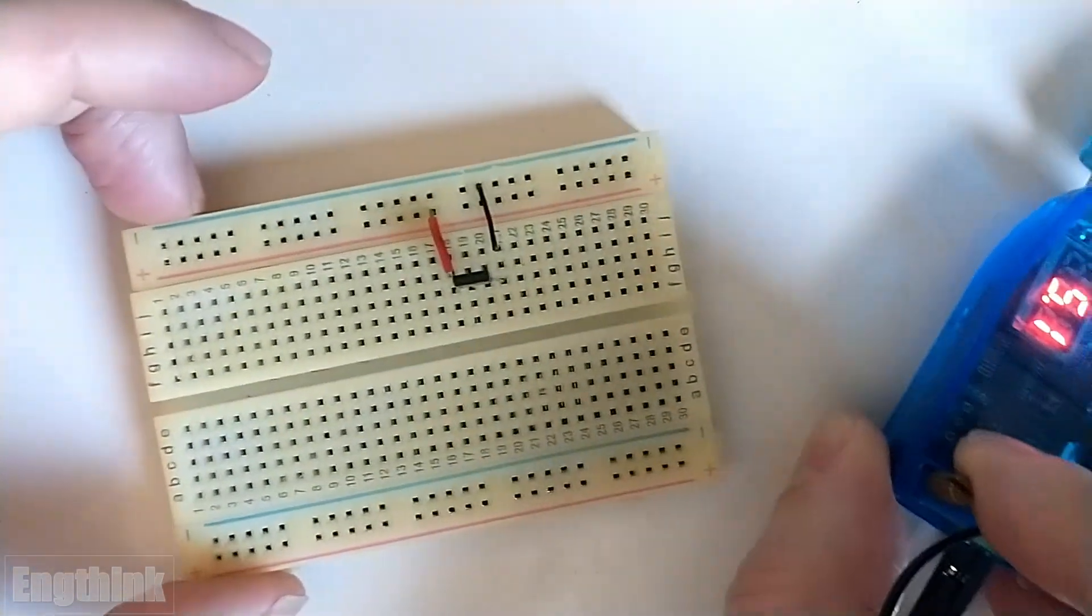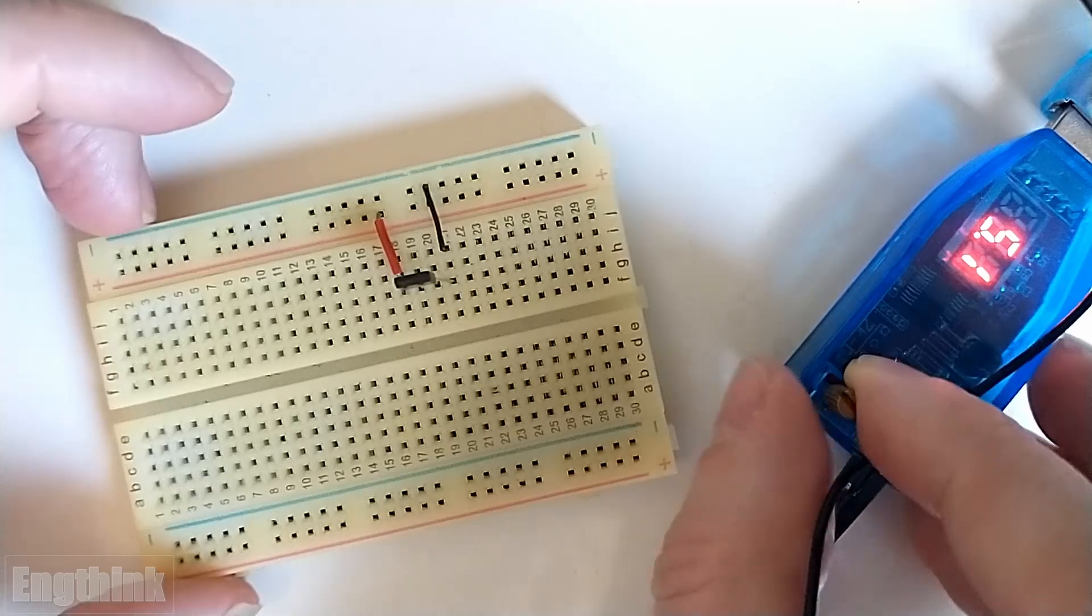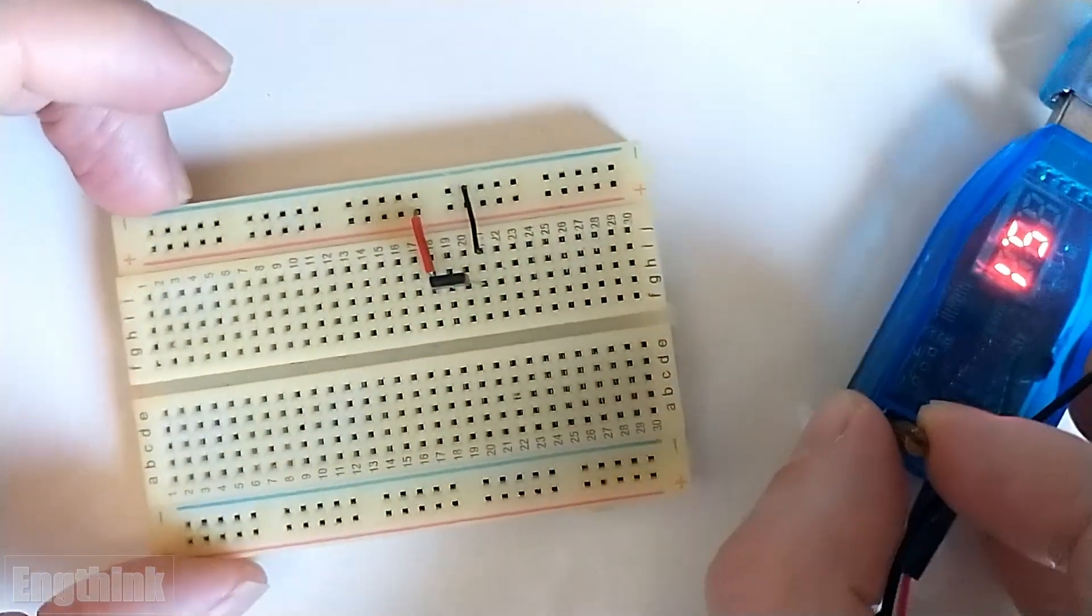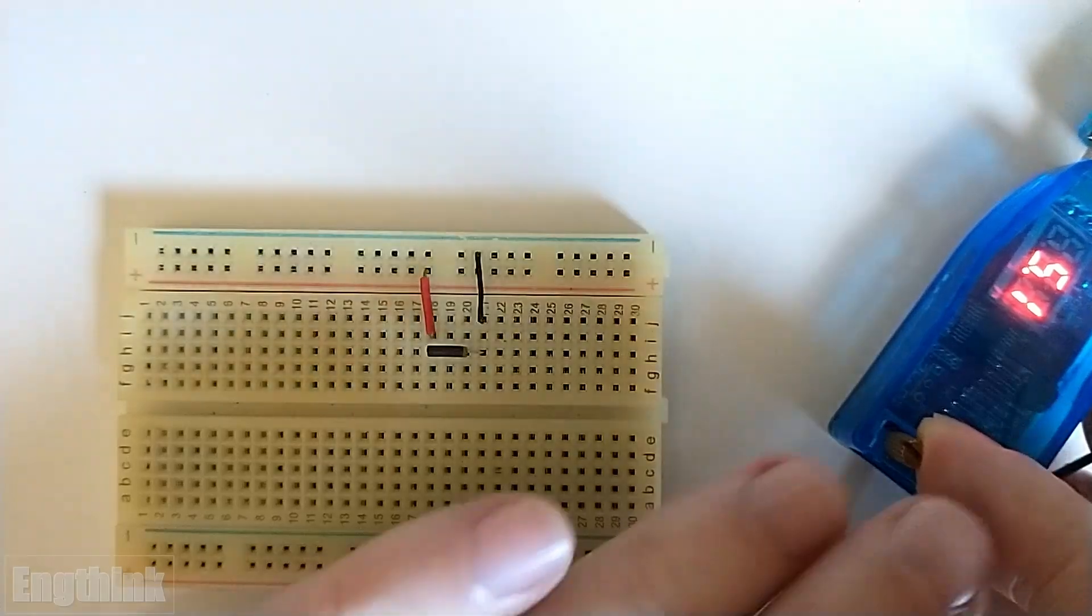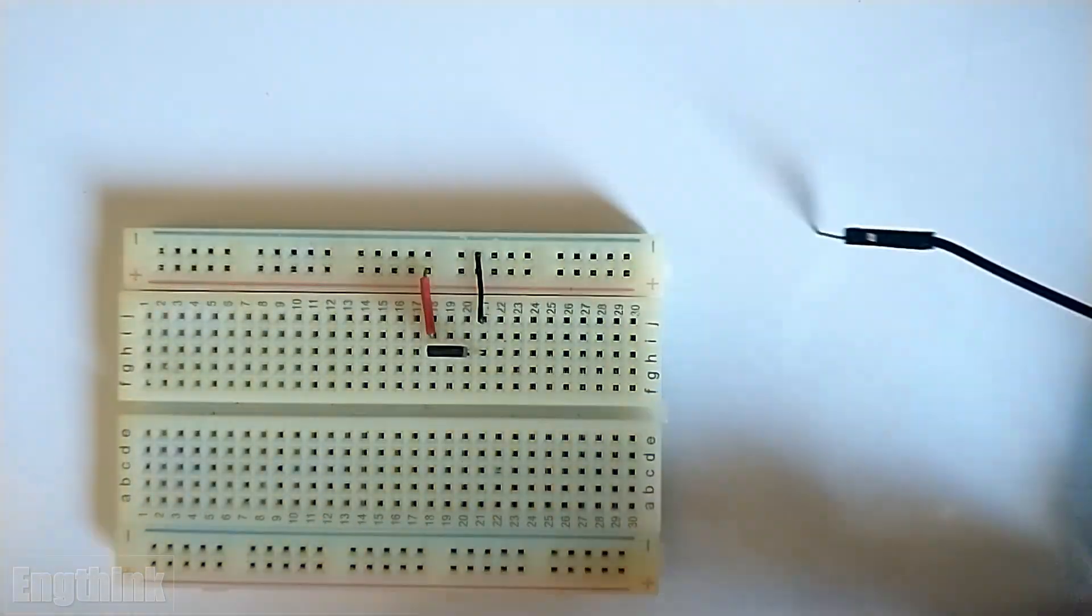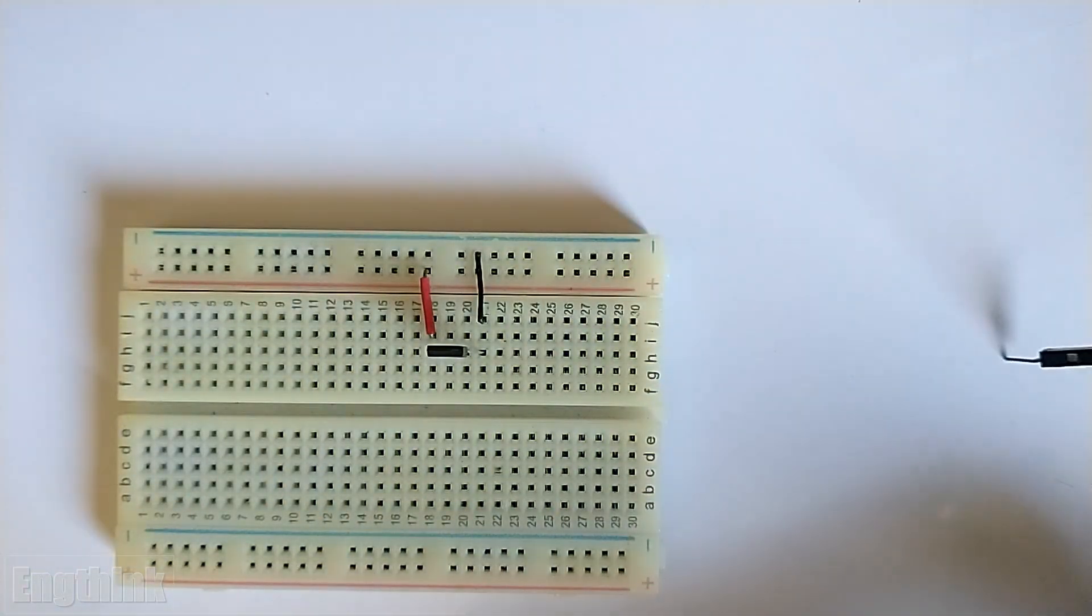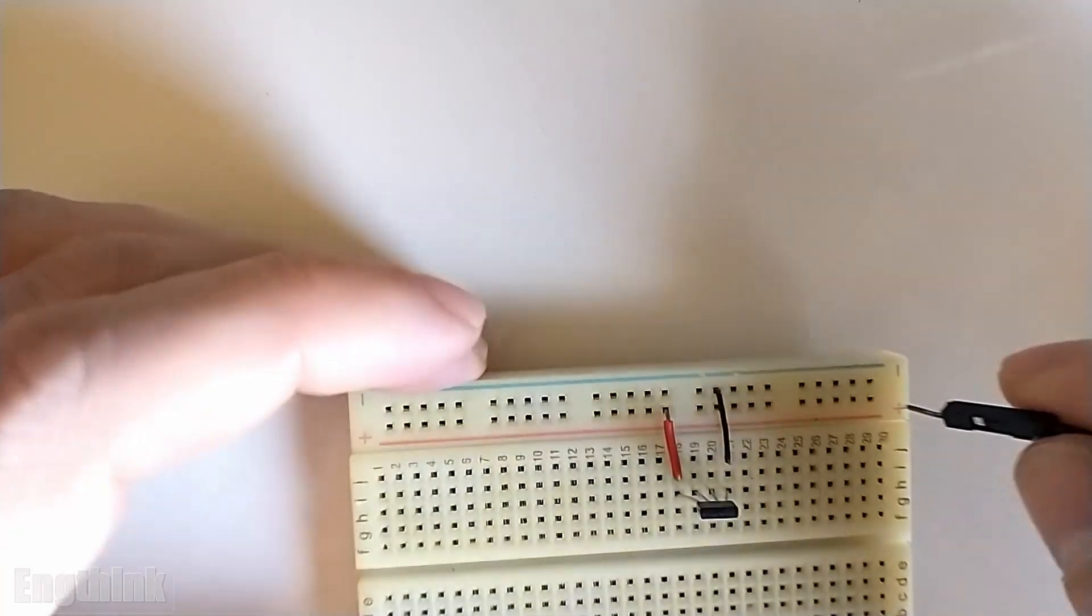For the power supply, I will use this DC-DC converter. This one is already adjusted to around five volts DC. Once we have the power supply, it's just necessary to do a connection to energize the breadboard.